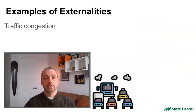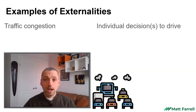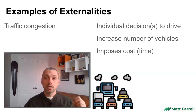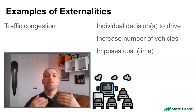Here are some classic examples of externalities we consider in environmental economics. Traffic congestion is a big one. The decision to drive somewhere is an individual decision — maybe you're driving to work, to visit somebody, or to get a Junior Whopper. However, lots of different people making those individual decisions will increase the number of vehicles on the road. That imposes a cost on everybody else. My personal decision to drive could make things worse for everybody else by increasing congestion and imposing an additional time cost on their commute.